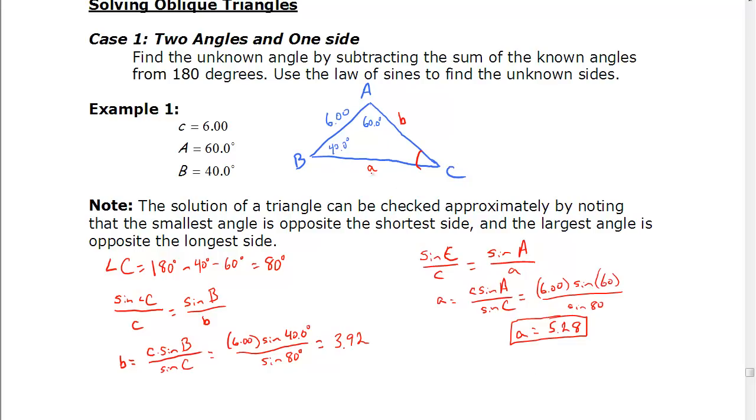So to check and see if the answer makes sense, we're going to write down the answers we got up here. So that was 5.28, this is 80, and this is 3.92. If we look at our measurements, our smallest angle is B, our smallest side is B, so that makes sense. Our smallest has to be across from our shortest. Our largest angle is 80, our longest side is 6, so that's C and C, so largest is opposite the longest. So our answer makes sense.